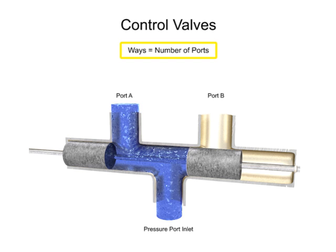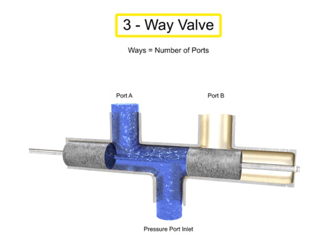A way refers to the number of active porting connections called ports. This valve has three ports, so it is a three-way valve.